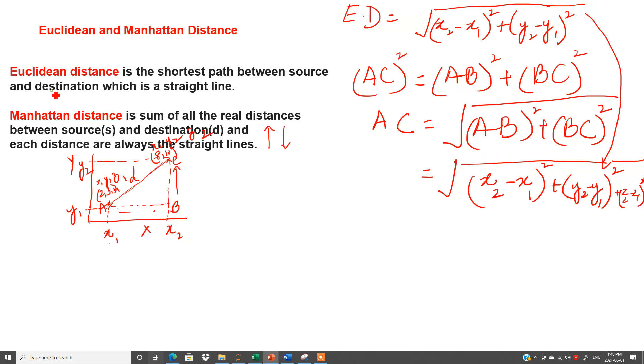Now we will move on to the Manhattan distance. So here again, suppose we have two coordinates, x and y, same thing, one point I will take from here, one point, this is my two points. A, B and C, same.